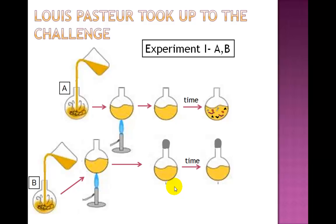What he observed next was that the flask that was left open, flask A, had microorganisms growing in it, as seen here. Whereas flask B that was sealed contained broth that was sterile, devoid of any microorganisms.